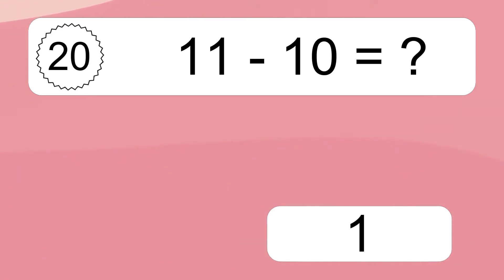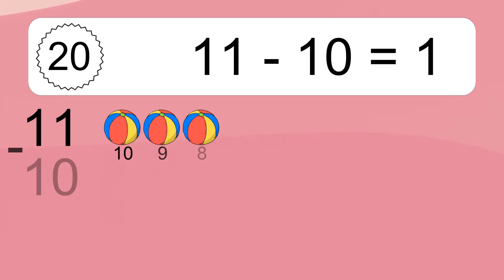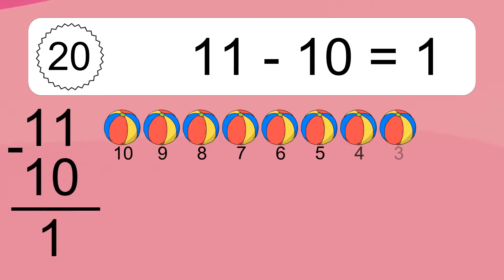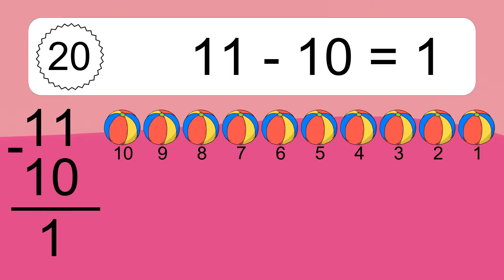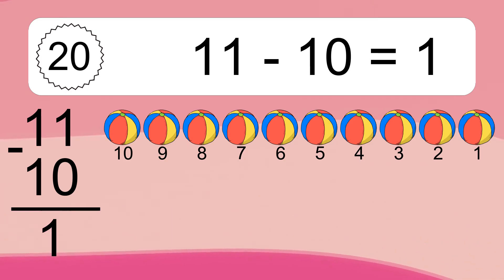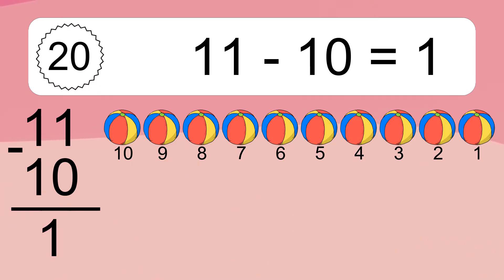11 minus 10 equals what? 11 minus 10 equals 1. Let's count it: 10, 9, 8, 7, 6, 5, 4, 3, 2, 1.